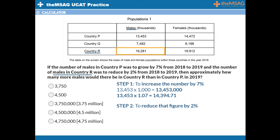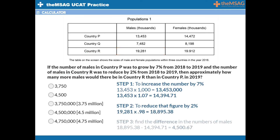Again, the actual number is 19,281,000, but let's save some time. Take 19,281 and multiply it by 0.98 to give you 18,895.38. Step 3 is now to subtract these numbers to find the difference in the number of males. 18,895.38 minus 14,394.71 gives us 4,500.67. We must remember that this figure should be multiplied by 1,000 to get the actual difference — 4,500 in thousands means 4.5 million in reality. Therefore, 4.5 million is the answer.